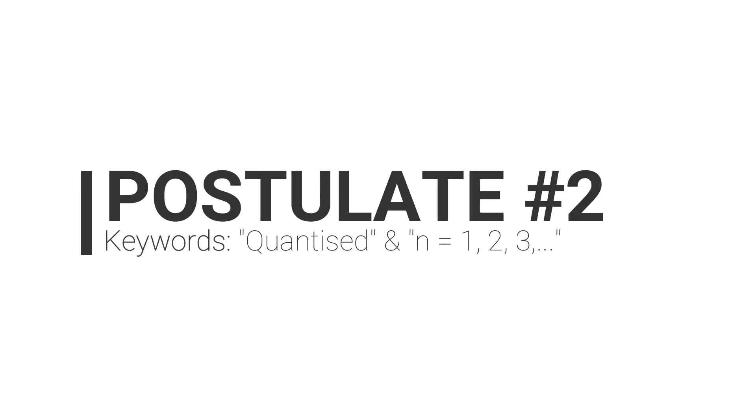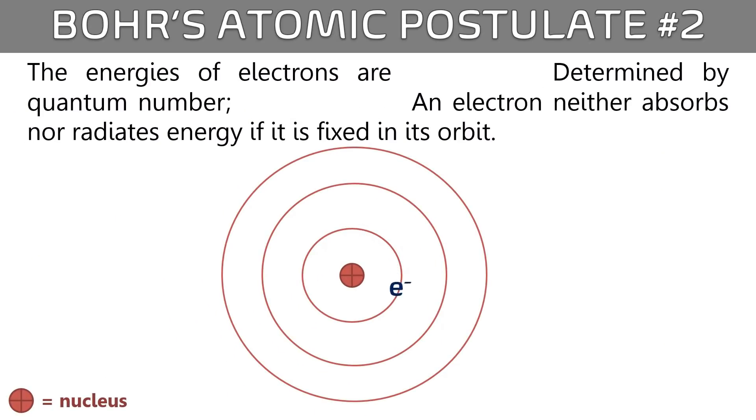Postulate number two. The energies of electrons are quantized, determined by quantum number N equals to 1, 2, 3, 4, 5, and until infinity. You get the point, right?